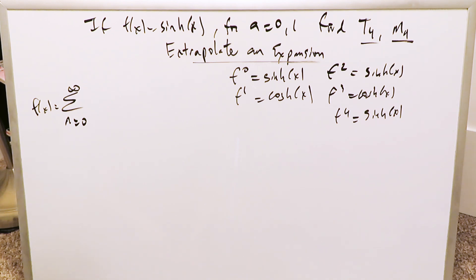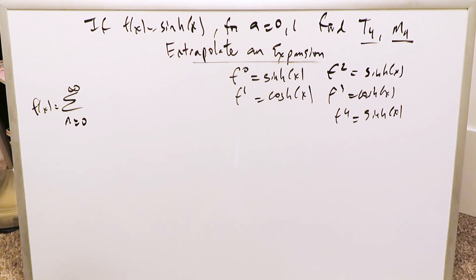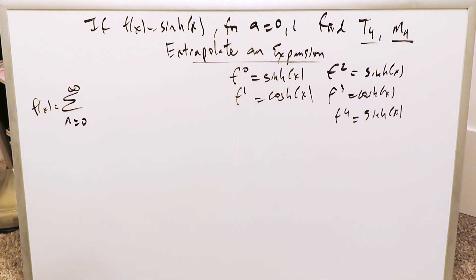We have to find T4 and M4. You know by now that means you're finding two different polynomials — the Taylor polynomial going up to n equals 4, and the Maclaurin polynomial going up to n equals 4. Then extrapolate a possible expansion. Which of these do you imagine would be the easier polynomial? In all instances, the Maclaurin polynomial, because a equals 0 — you have fewer terms and it's less messy.